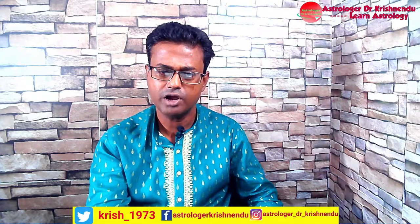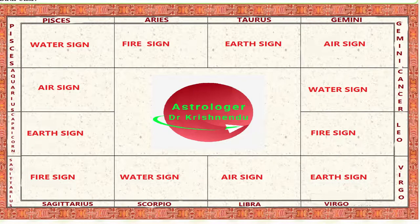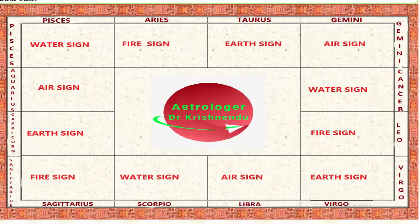Now let's talk about fire, earthy, airy, and watery signs. Aries, Leo, and Sagittarius are fire signs. Taurus, Virgo, and Capricorn are the earthy signs. Gemini, Libra, and Aquarius are the airy signs. Cancer, Scorpio, and Pisces are watery signs.